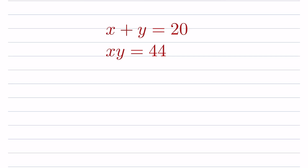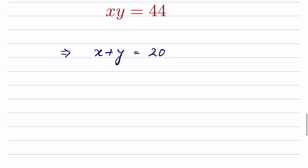If x plus y is equal to 20 and x times y is equal to 44, we have to find the value of x and y. From x plus y equals 20, we can get the value of x. Let x equal 20 minus y — let this be equation 1.